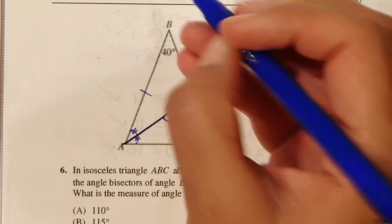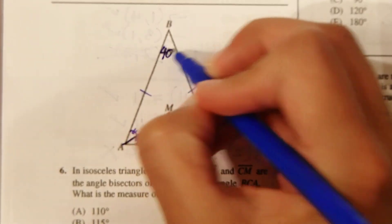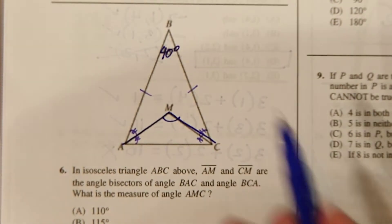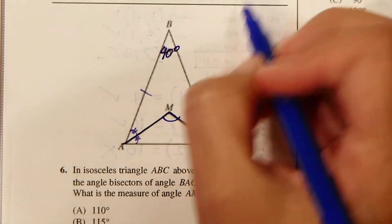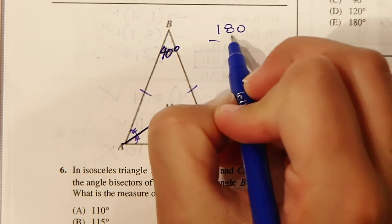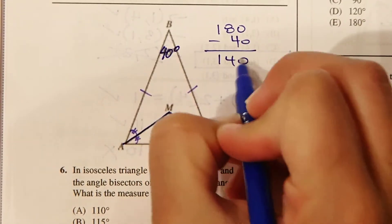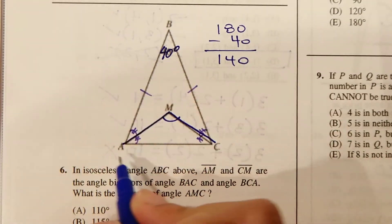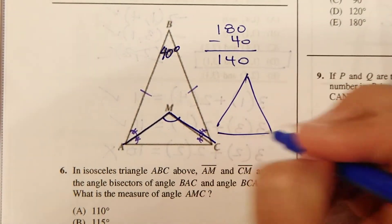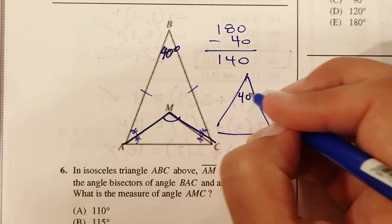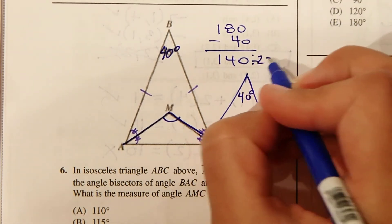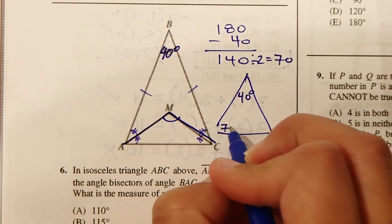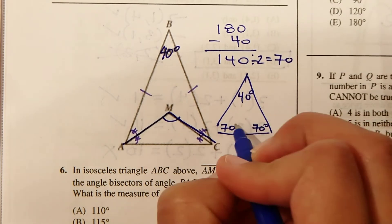So up here, if you notice, we have, this is 40 degrees. So if this is an isosceles triangle, then we can say 180 degrees minus 40 equals 140. And that has to be split evenly between these two total angles here, between angle A and angle C. So without these two splits, we've got 40, and then divide this by 2 equals 70. So each one of these angles down here is 70 degrees.